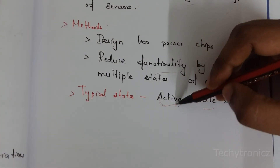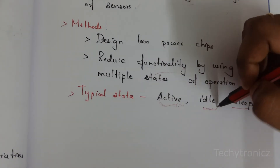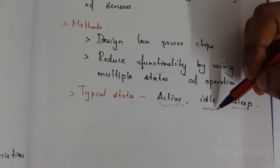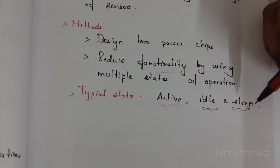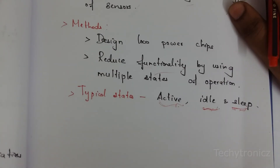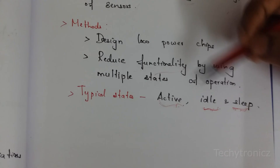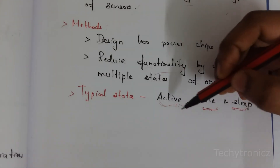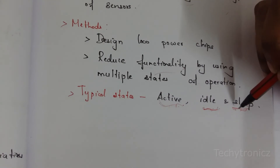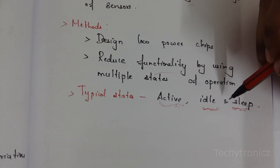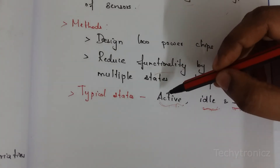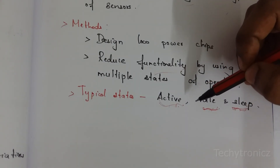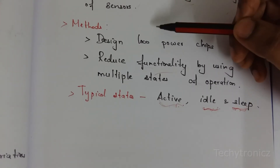Sensor nodes operate in three states: active, idle, and sleep. In active state, processing and information collection occur. In idle state, it is free time with no transmission operation, but the channel is ready to accept information. In sleep state, no active operation occurs. By putting sensors into sleep mode when not needed, energy consumption is significantly reduced.